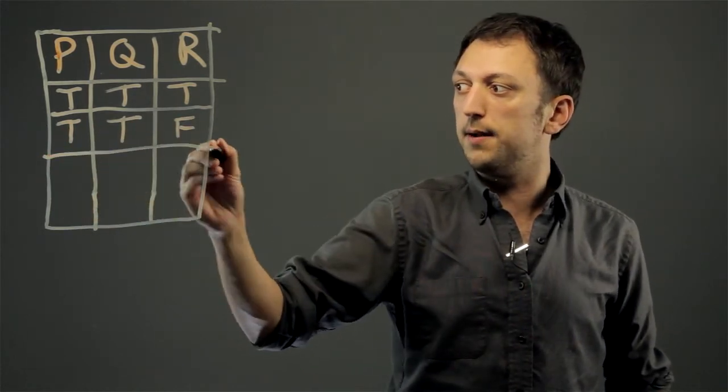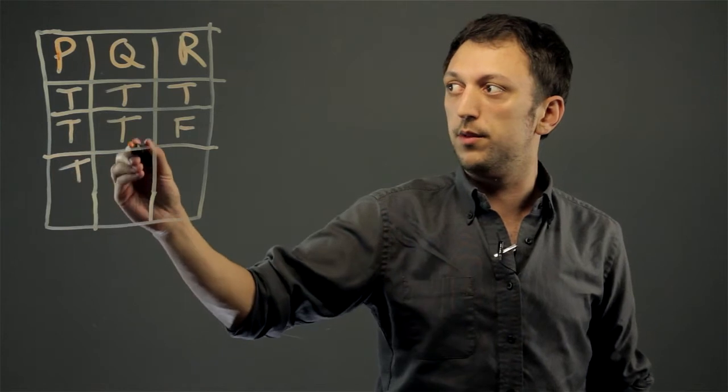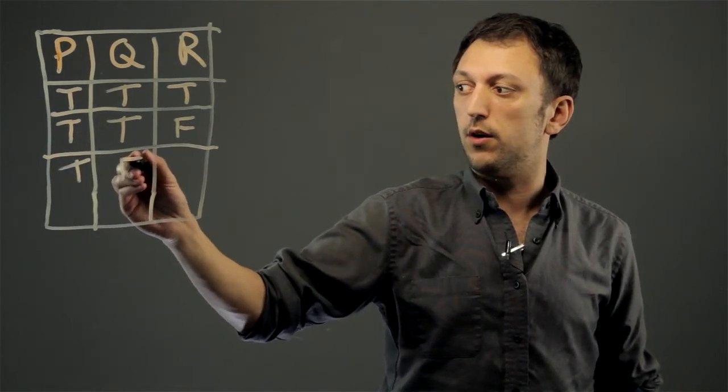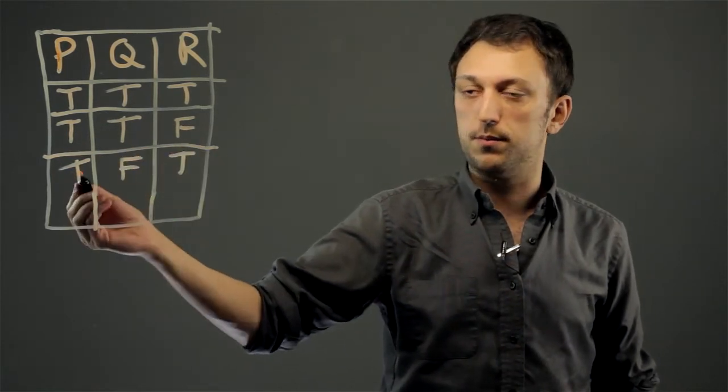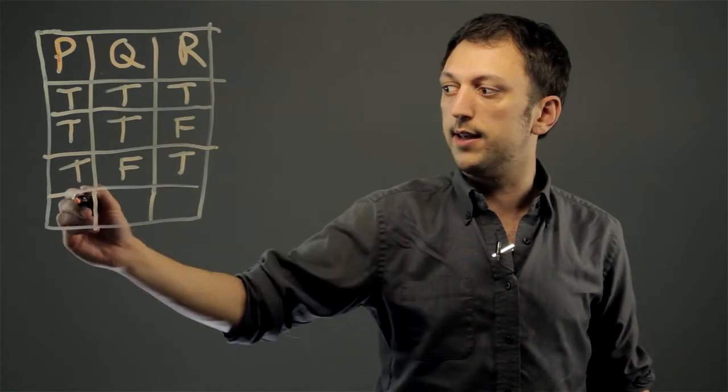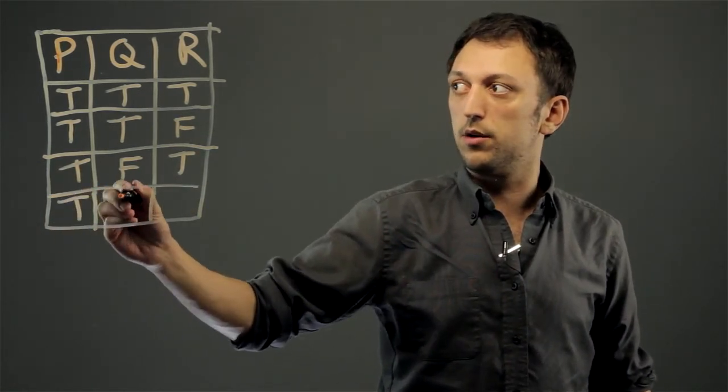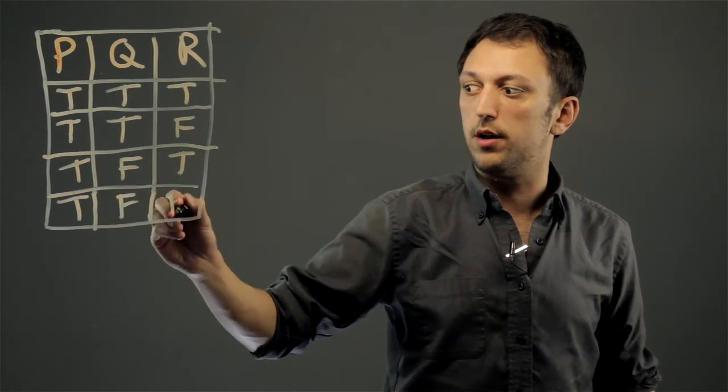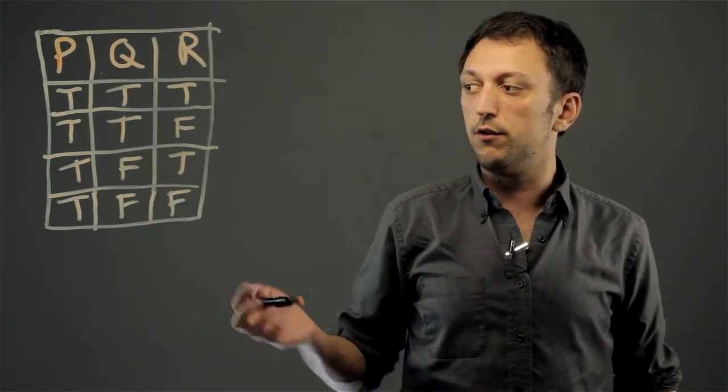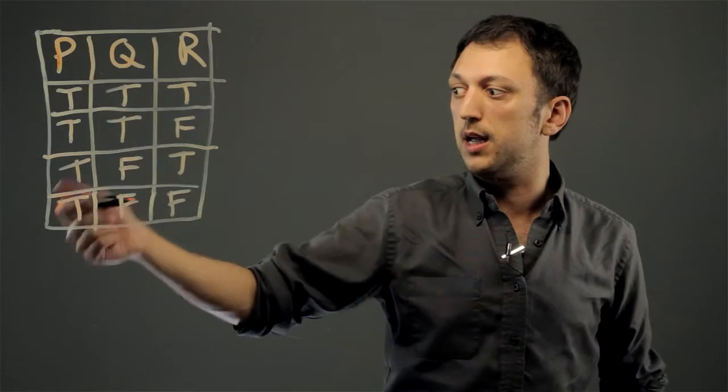Now we want to say P is true, Q is false, R is true, and we could say P is true, Q is false, R is false. So this is all the combinations for P being true.